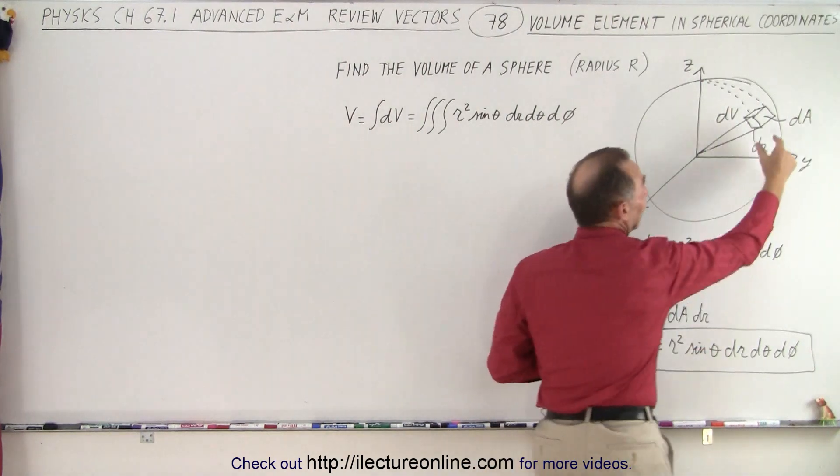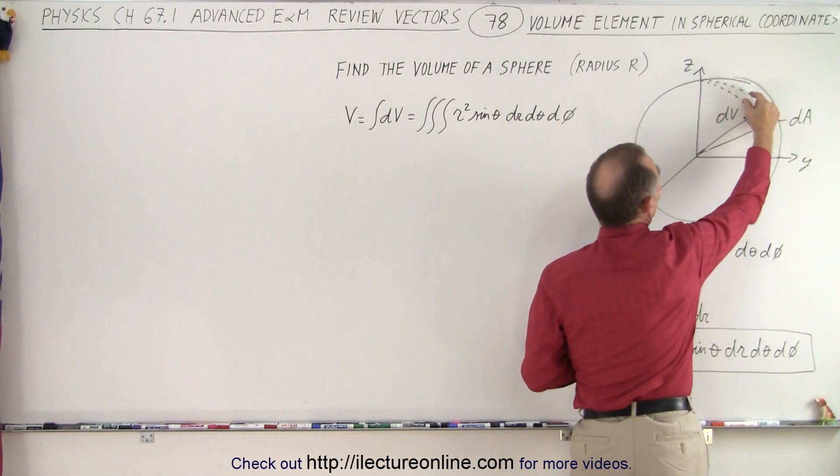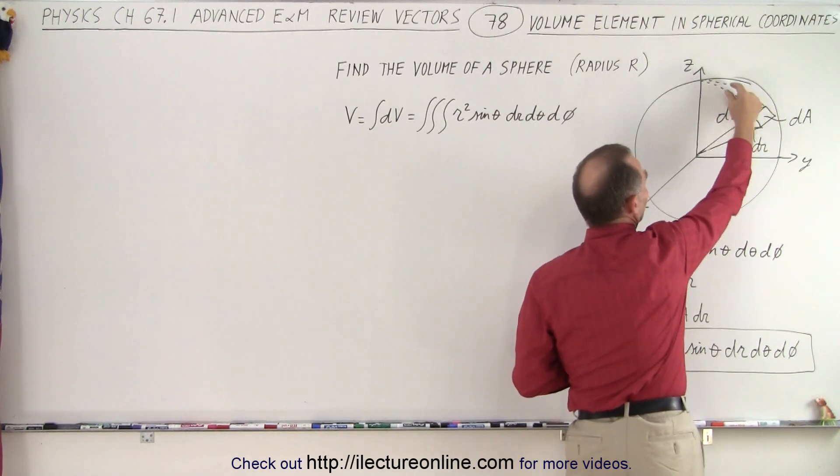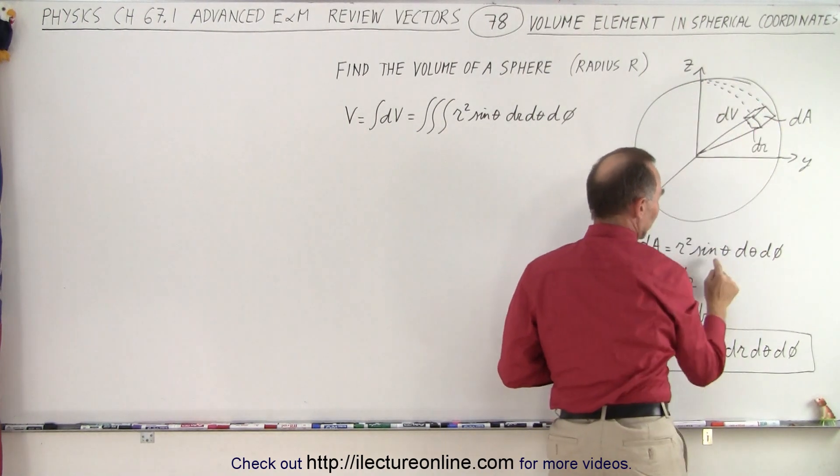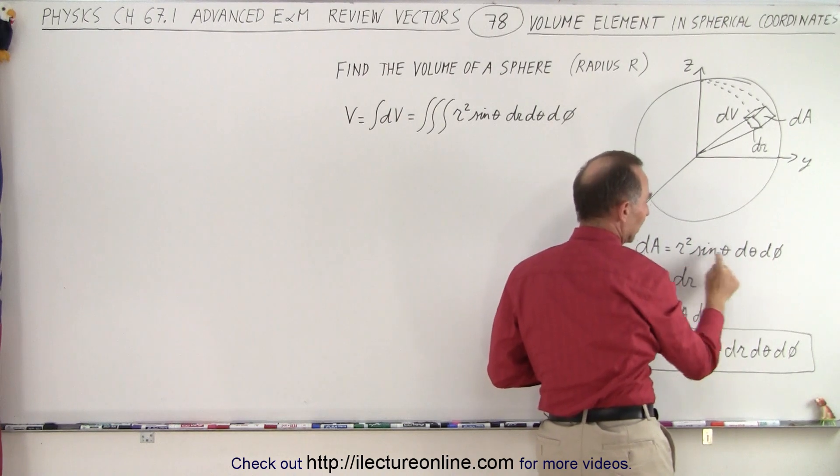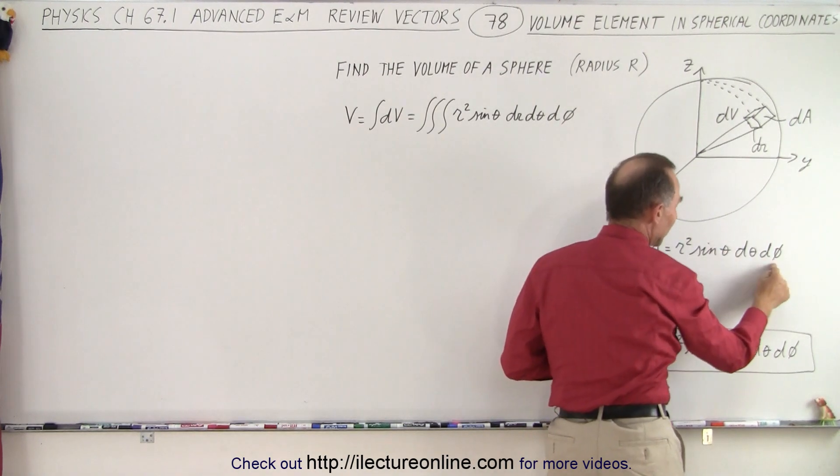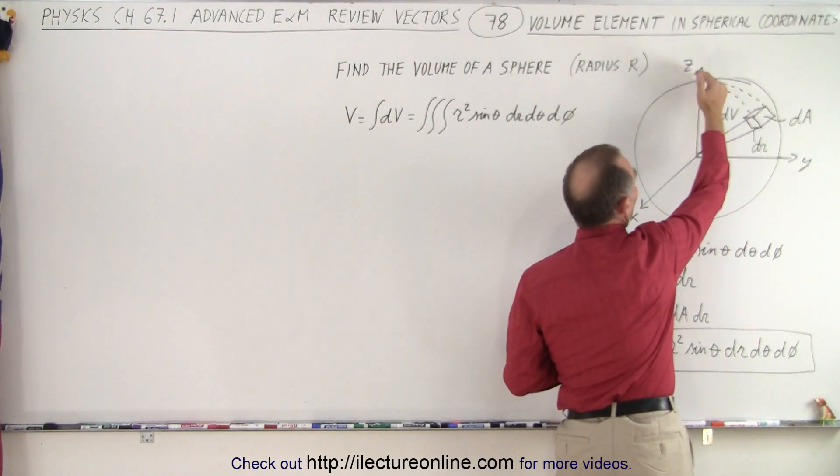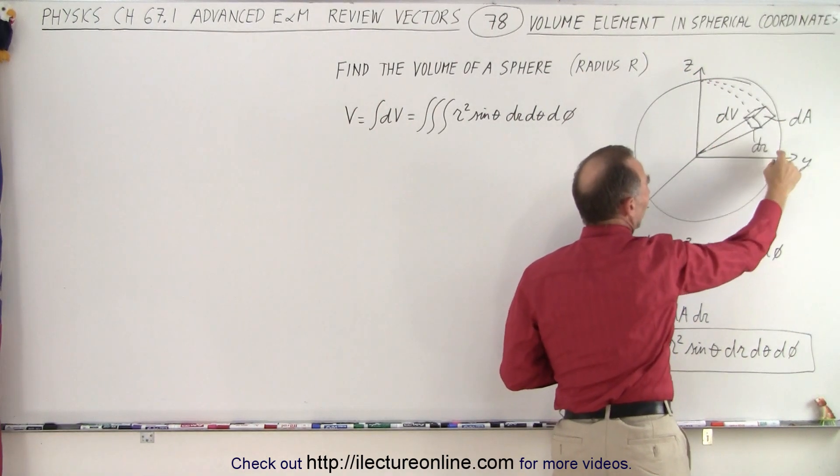But then we have to realize that this length right here diminishes as we get to the pole of that sphere essentially. So we also have to take into account the sine of theta. That's where the sine of theta comes from. So it's r d theta times r dφ times the sine of theta because when theta equals zero degrees the sine of zero is zero and the sine of 90 is one.